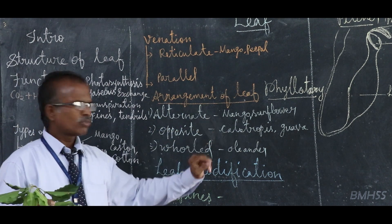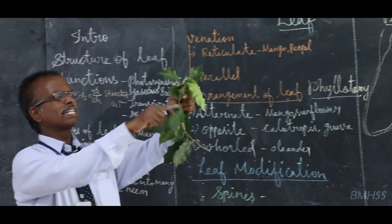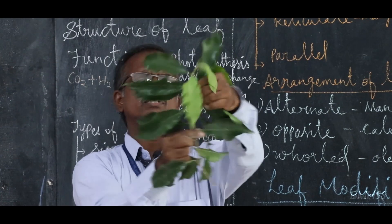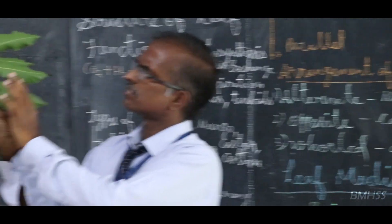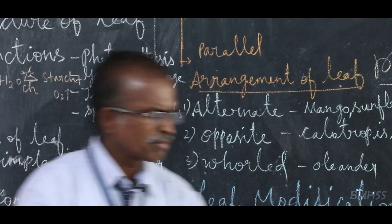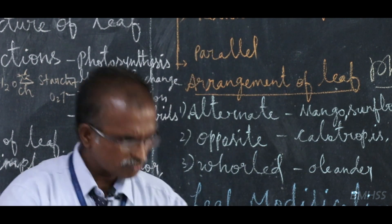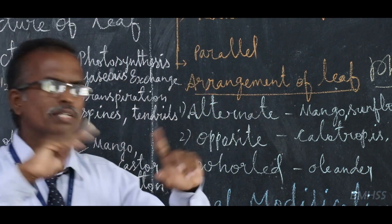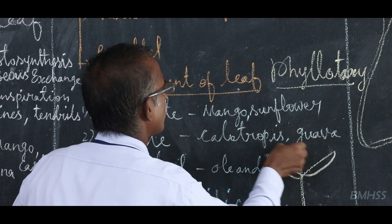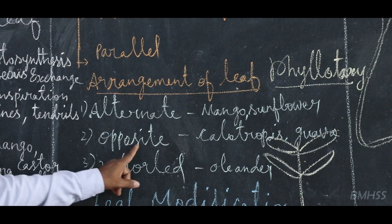The first is called alternate — where leaves are arranged alternately on the sides of the stem, opposite to the older leaves, arising between two older leaves. The second is opposite — where two leaves are arranged directly opposite to each other on the stem, as in Calotropis.